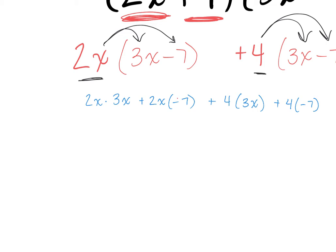Before I go any further, are there any questions on this step? All I did was distribute the first set and the second set — the 2x got distributed to the 3x and the minus 7, and the 4 got distributed to the 3x and the minus 7 as well. Any questions?